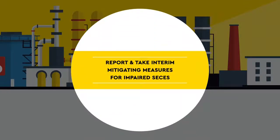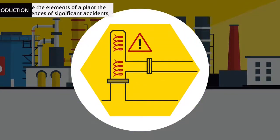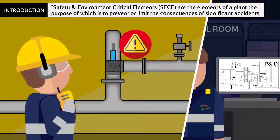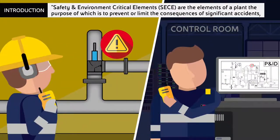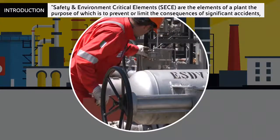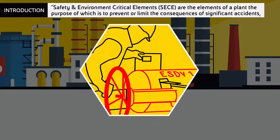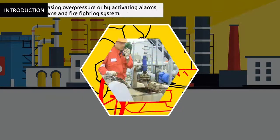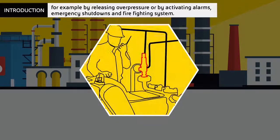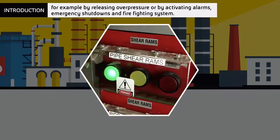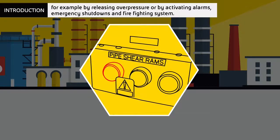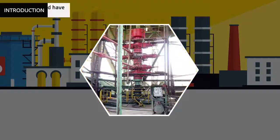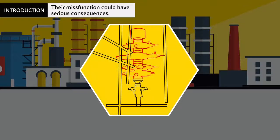Report and take Interim Mitigating Measures for Impaired CCs. Safety and Environment Critical Elements are the elements of a plant, the purpose of which is to prevent or limit the consequences of significant accidents, for example by releasing overpressure or by activating alarms, emergency shutdowns and firefighting systems. Their malfunction could have serious consequences.